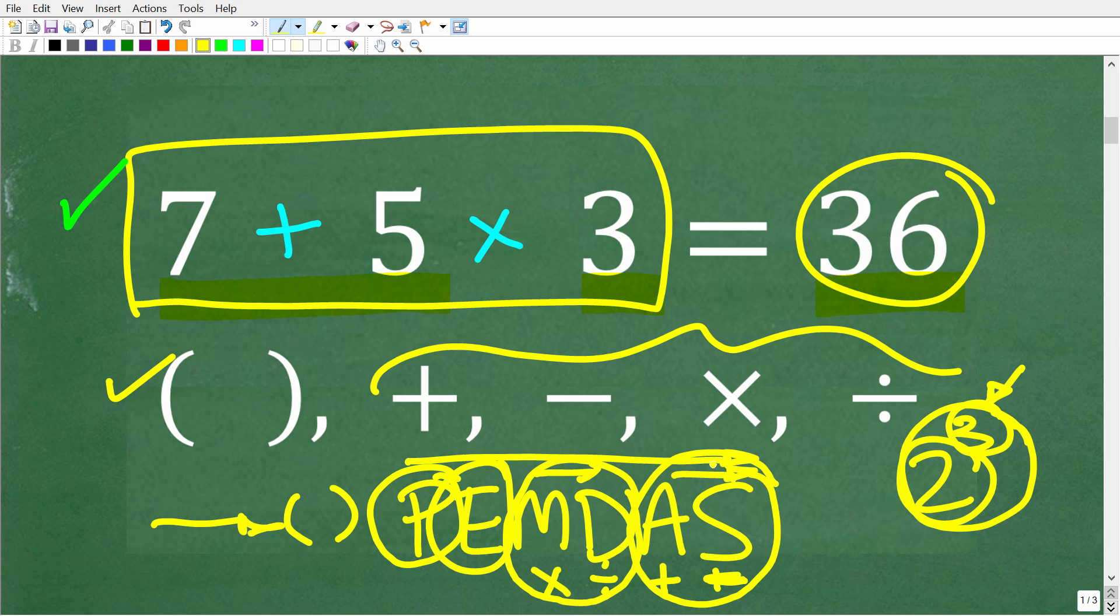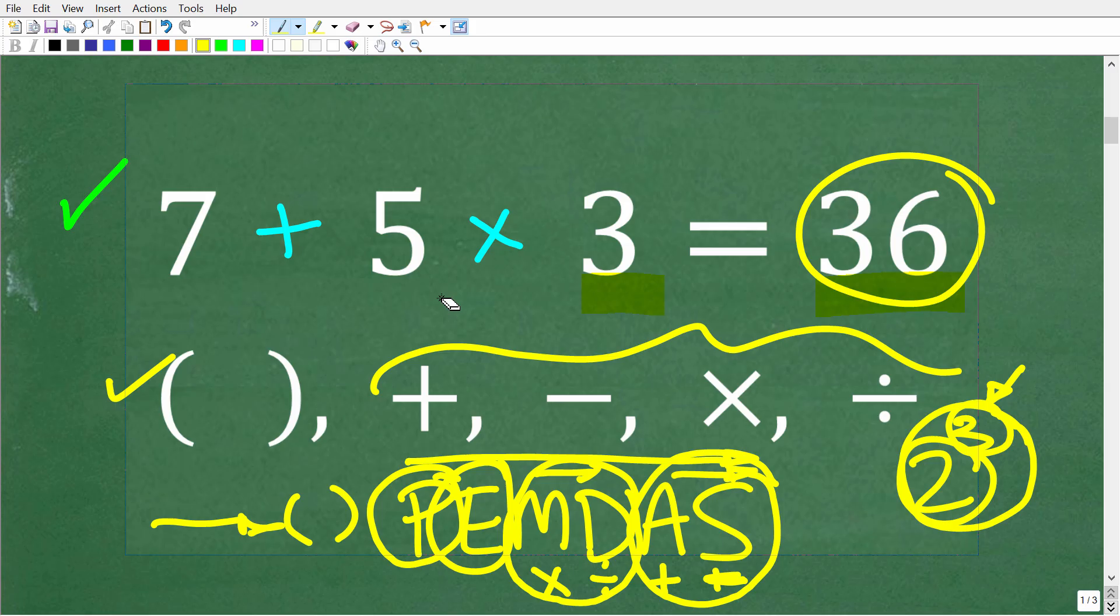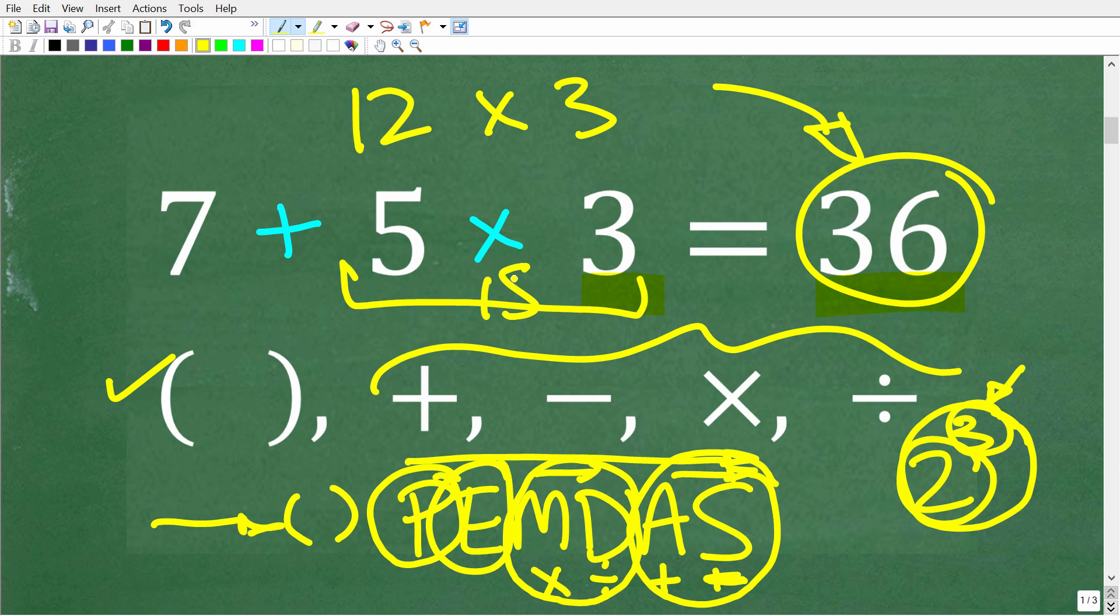Okay, so thinking about the PEMDAS checklist here, we can kind of go back to this combination of number operations and say, All right, well, I want to get a 12 and multiply it by 3 because that will get me to 36. And that is great thinking. Unfortunately, if we have an addition sign here and a multiplication sign here, what we have to do is not addition first. We have to do the multiplication first. So 5 times 3 is 15. And then 15 plus 7 is not going to get us to 36.